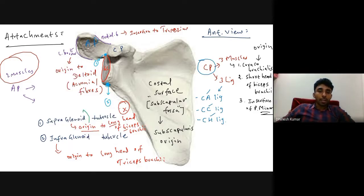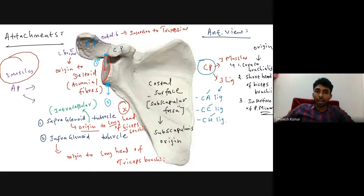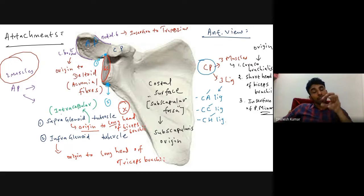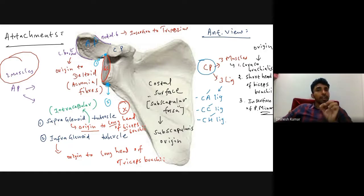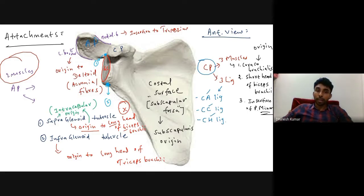An important clinical point: the peculiarity of the origin of the long head of biceps brachii from the supraglenoid tubercle is that it is intracapsular — meaning it arises within the fibrous capsule of the shoulder joint. So the long head of biceps brachii has an intracapsular origin.